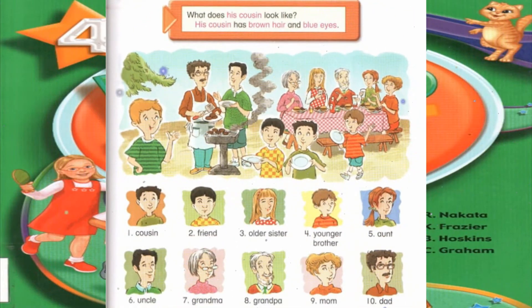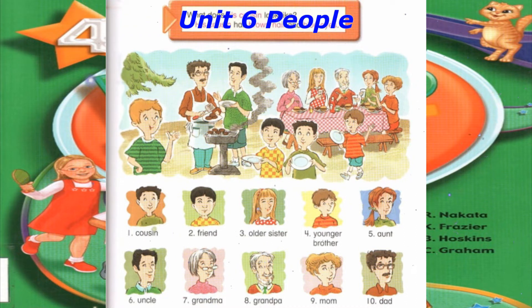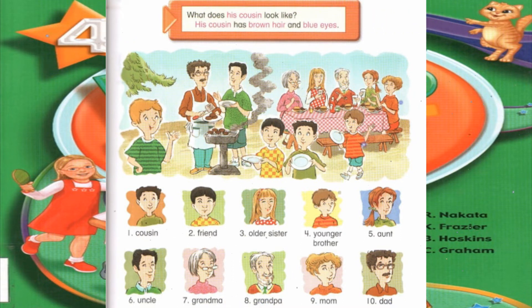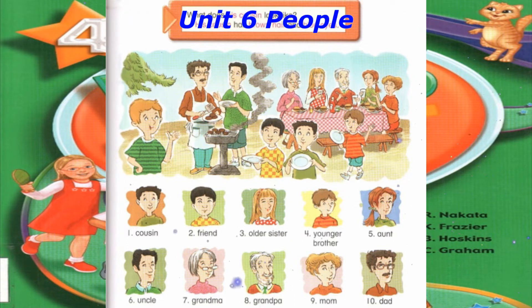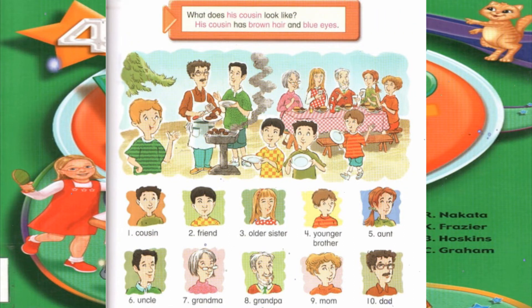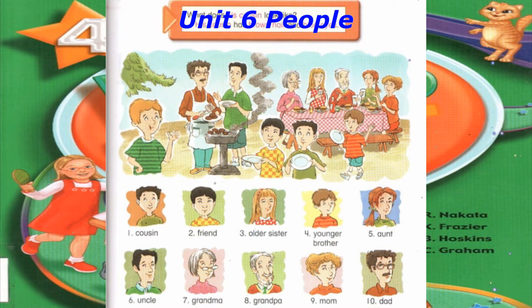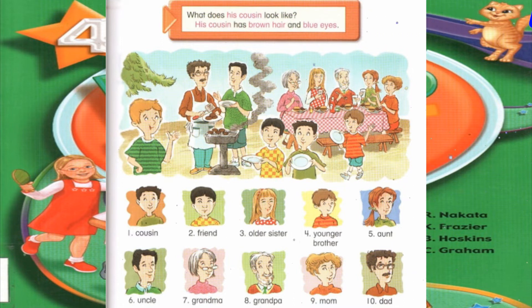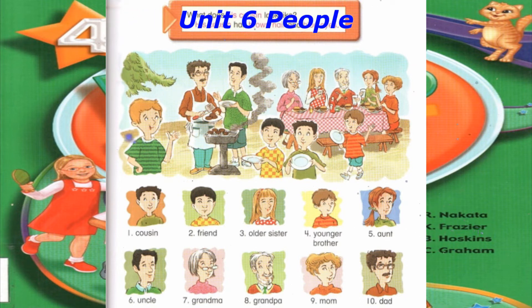Track 31, C. Practice the question and answer. Number 1: What does his cousin look like? His cousin has brown hair and blue eyes. Number 2: What does his friend look like? His friend has black hair and black eyes. Number 3: What does his older sister look like? His older sister has long blonde hair, green eyes, and bangs.